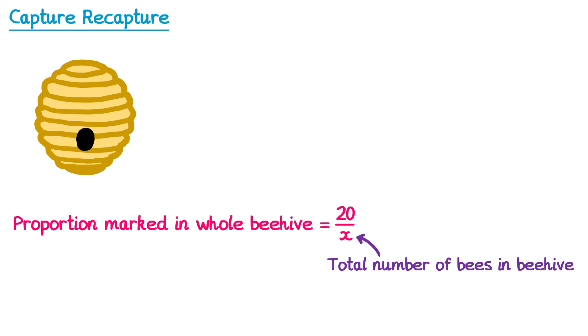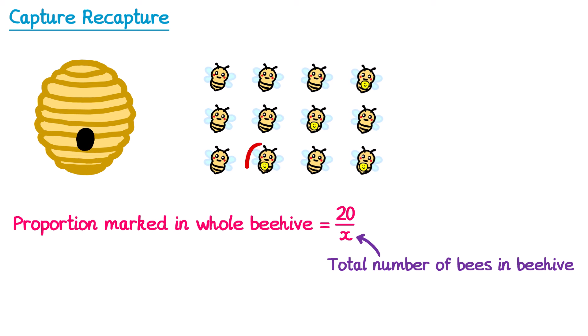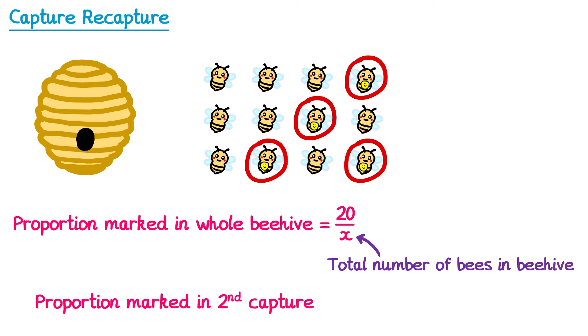After some time we'd go back to the beehive and take a second capture — and it doesn't necessarily have to be 20 bees again. For this second capture I'm going to take 12 bees. In this second sample, 4 of the bees have the mark from the first capture and the remaining bees don't. So the proportion marked in the second capture is 4 over 12.